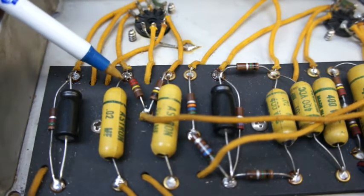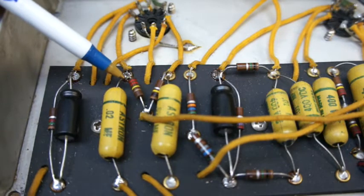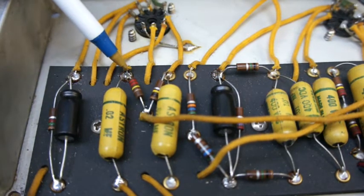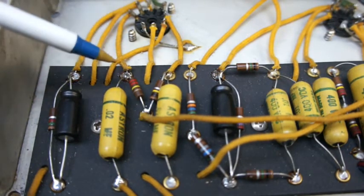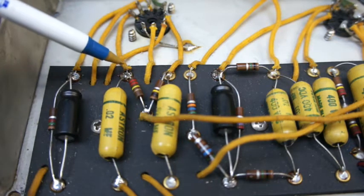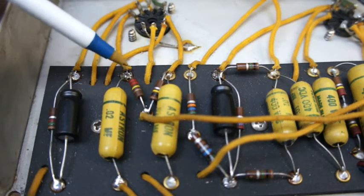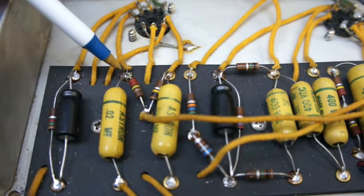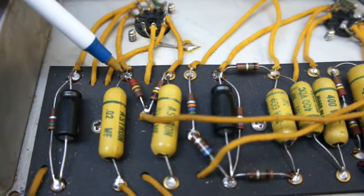Most Fender amps use 100k for the plate load resistor. In this case, I've chosen 220k. I've used a carbon comp, so it looks almost identical to the one I pulled out of there. And that gives me a slight gain boost through the first stage.